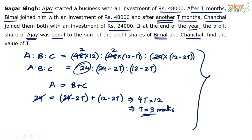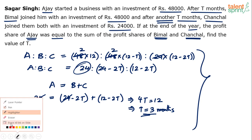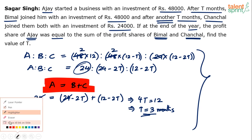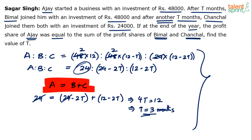Don't waste time writing every step — at least one step can be cut, such as writing A = B + C separately. Do the calculation and get the answer directly. The value of T is 3 months.